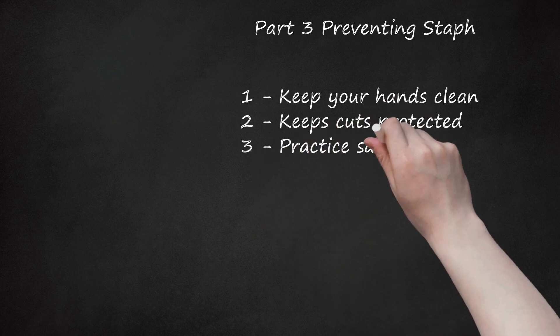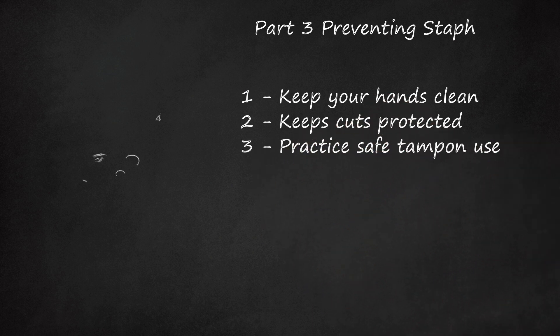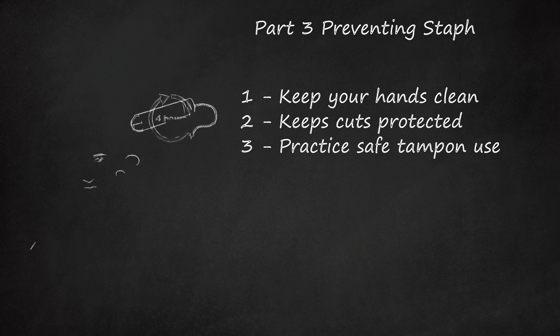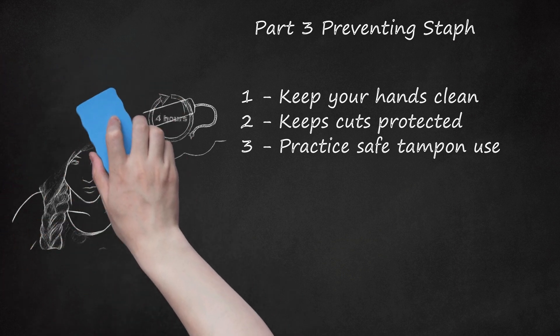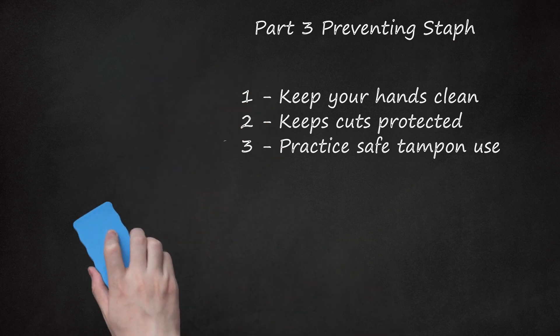Practice safe tampon use. A tampon should only be used for a short period of time before it must be changed. Using one tampon for too long can lead to staph bacteria multiplying and causing life-threatening toxic shock syndrome. Avoid this risk by changing tampons when necessary. Change tampons at least once every 4 to 8 hours. Low-absorbency tampons can reduce the risk of toxic shock syndrome.